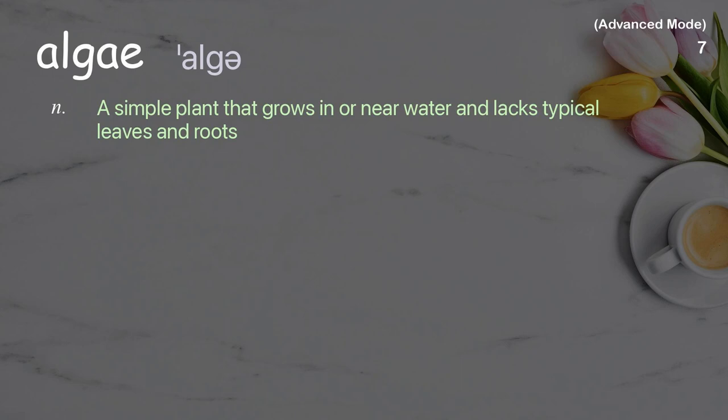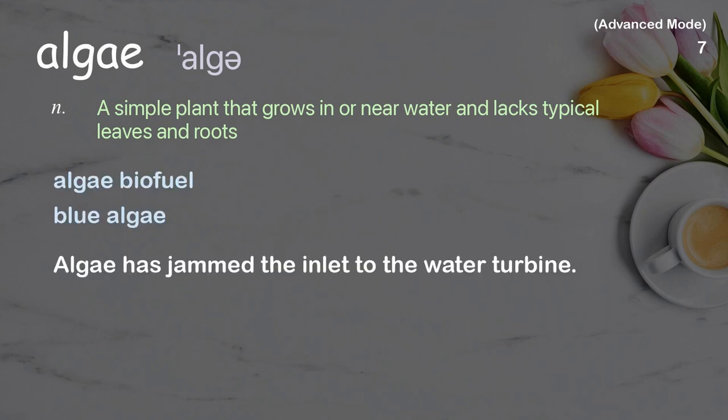Algae: a simple plant that grows in or near water and lacks typical leaves and roots. Examples: algae, algae biofuel, blue algae. Algae has jammed the inlet to the water turbine.